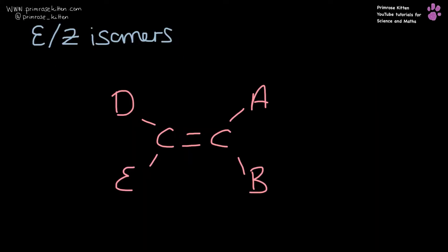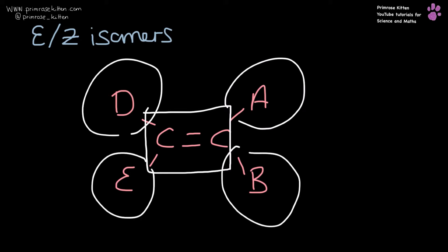So for EZ isomers, what we are looking at is a carbon-carbon double bond, and it really helps if you can redraw it. So you've got your carbon-carbon double bond in the middle here, and then we can think of each of these as different substituent groups.